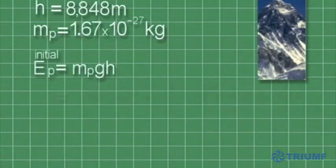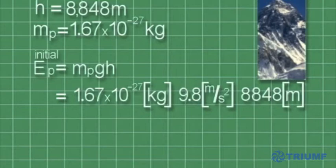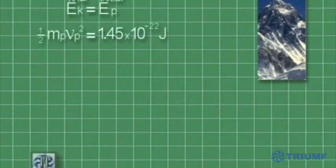Using these values, and the known value for gravity, we can calculate the gravitational potential energy. Equating the initial potential energy with the final kinetic energy, we can determine the proton's velocity.